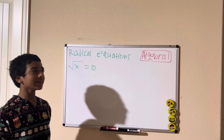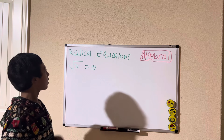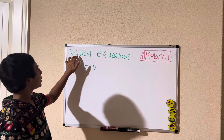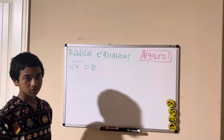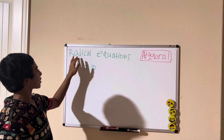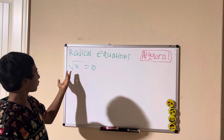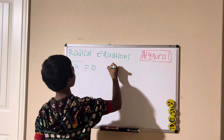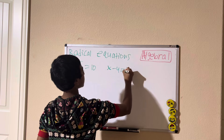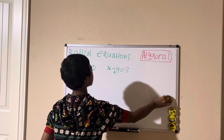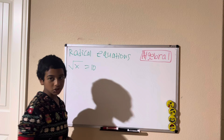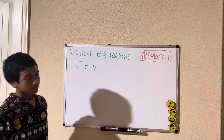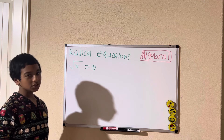Welcome back to my channel. Today in Algebra 1 we're going to learn how to solve radical equations. A radical is nothing but a square root, so it's basically a square root equation. But how would you solve for x? We have the square root of x equals 10. If we had a normal equation like x minus 4 equals 3, you would add 4 to remove it, or if it was multiplication you would divide — doing the opposite.